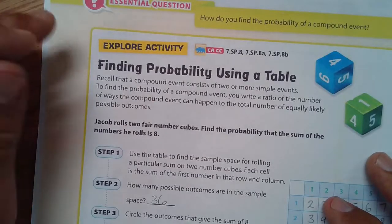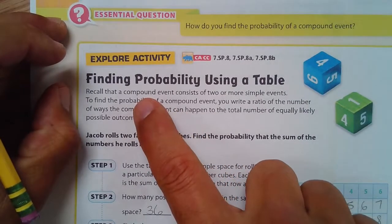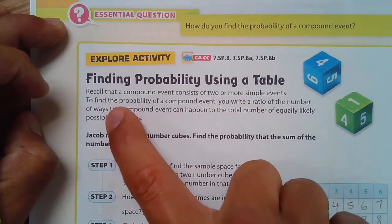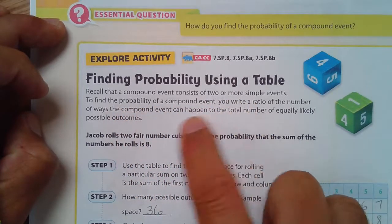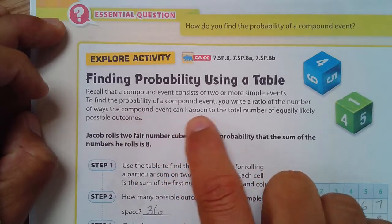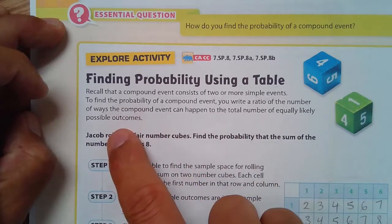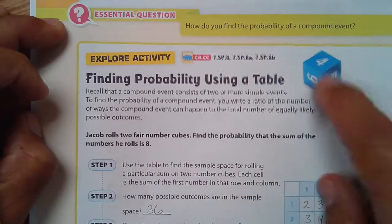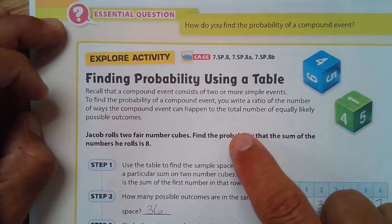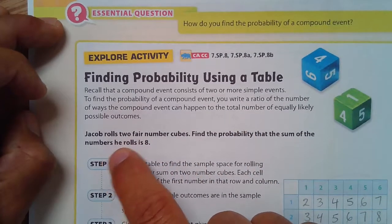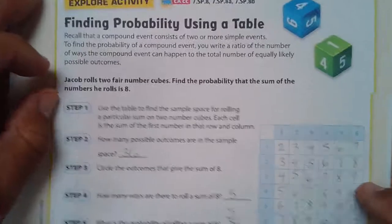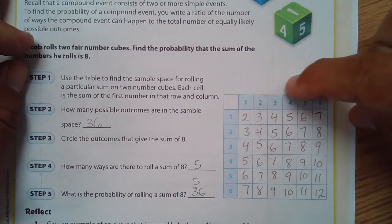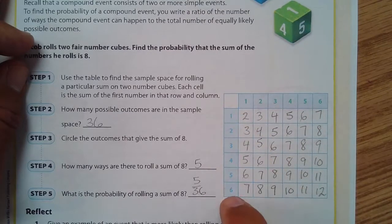Find the probability using a table. Recall that a compound event consists of two or more simple events. To find the probability of a compound event, you write the ratio of the number of ways the compound event can happen to the total number of equally likely possible outcomes. Jacob rolls two fair number cubes.